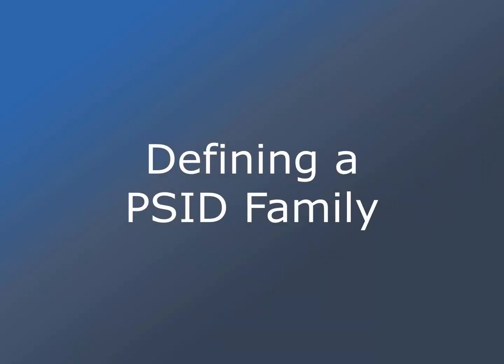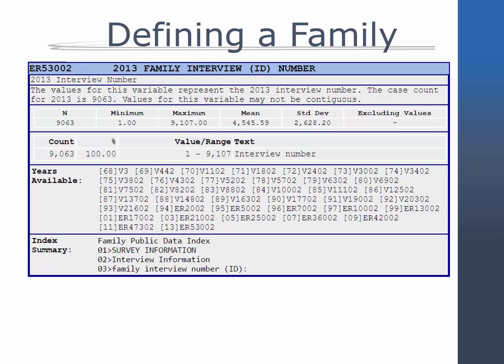Let's begin with an explanation of how to define a family in the PSID. In a single wave of the PSID, a family unit is defined as people living together on a permanent basis in a household who are either related by blood, marriage, or adoption, or are unrelated but are economically interdependent. The yearly Family Interview ID number indicates the family unit.